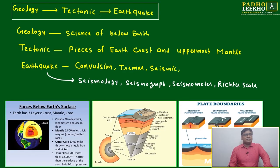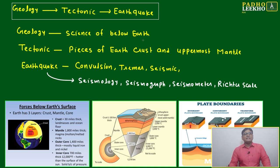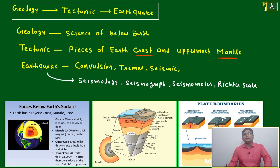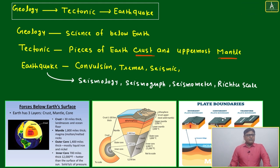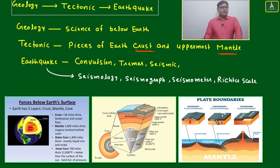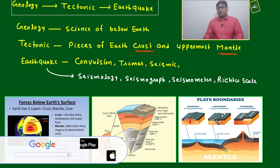Starting with connectives: geology, tectonic, and earthquake. Geology is the science of what lies below the Earth. Tectonic refers to pieces of the Earth's crust and uppermost mantle. Below the Earth there are different layers — at the very top is the crust, then the mantle, then the outer core, and finally the inner core.